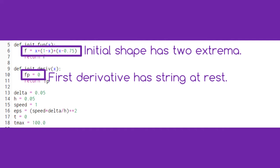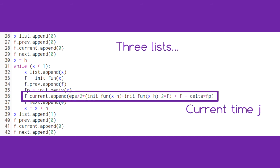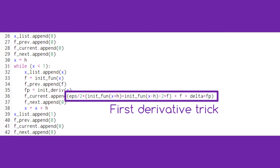We need three lists to keep track of our function's shape: one at the previous time step, one at the current time step, and one at the next time step. Here, we use our trick with the first derivative to get around having to know the shape at a negative time value.